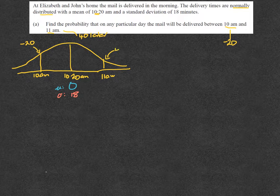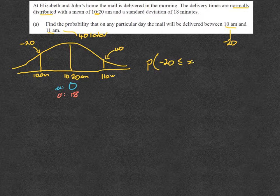So it's the minus 20 and the 40 that I put on the calculator. Basically, a probability statement would be: probability that the mail will be delivered between 20 minutes beforehand and 40 minutes afterwards, and that's what you're looking to find.